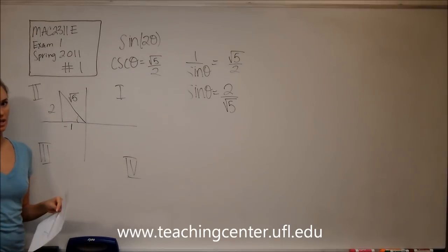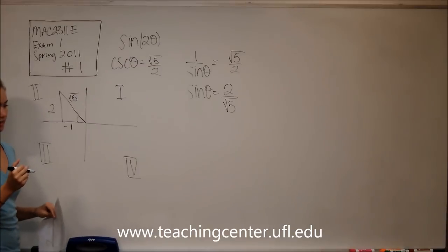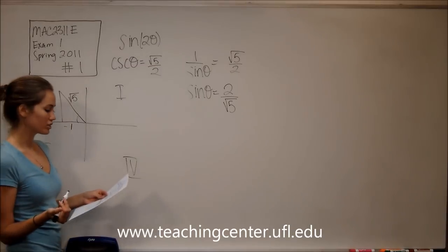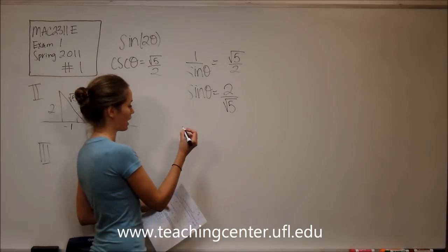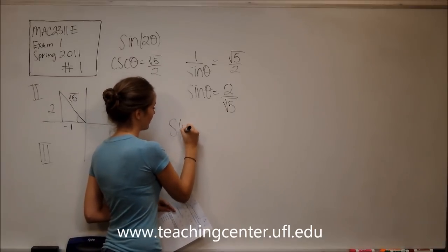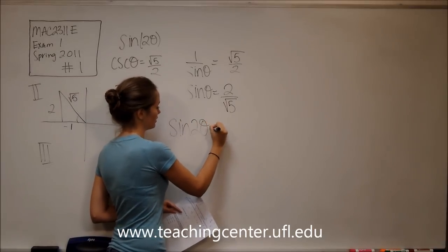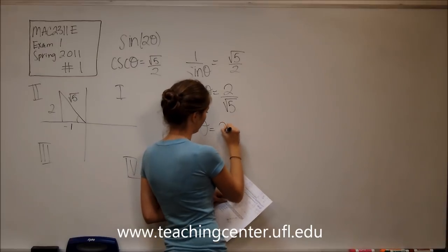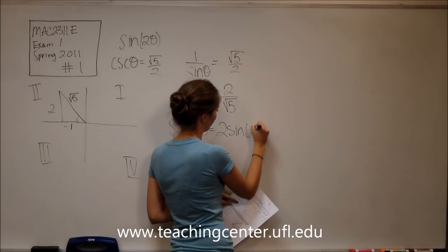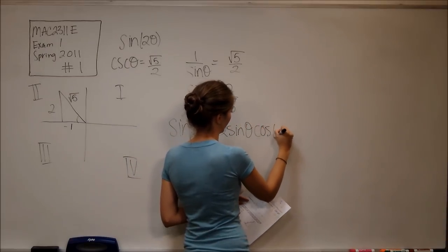Okay, so now we want to find sine two theta using all this information that they've given us. So we can use our double angle formula, and using that we know that sine of two theta is equal to two sine theta cosine theta.